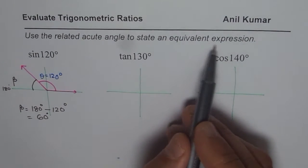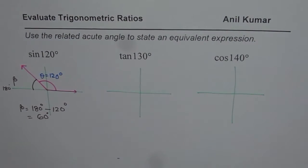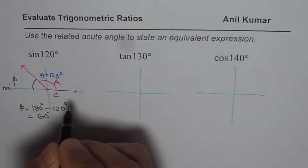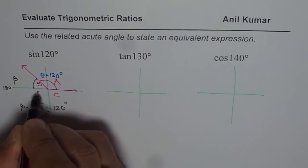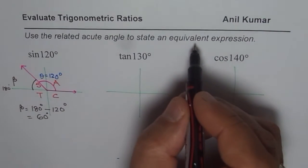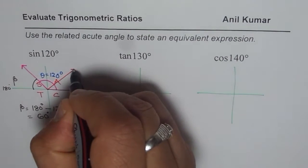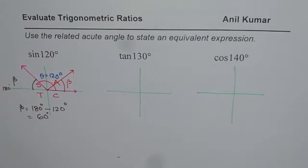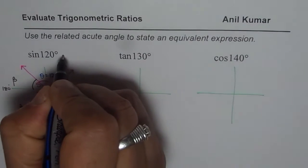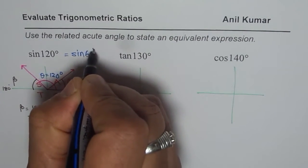We need to state an equivalent expression. We know sine is positive in two quadrants — quadrant 1 and quadrant 2. Writing down the CAST rule: cosine is positive in quadrant 4, all are positive in quadrant 1, sine in quadrant 2, tan in quadrant 3. Since we are looking for a positive value, the equivalent expression should be in quadrant 1 with the same acute angle beta. So sine of 120 degrees equals sine of 60 degrees.